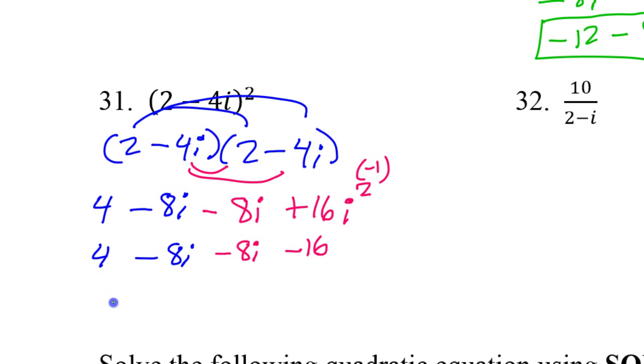And then you just combine like terms one more time. 4 and negative 16, that's negative 12. Negative 8 and negative 8 make negative 16i. So that would be your answer to number 31. Any questions on number 31?